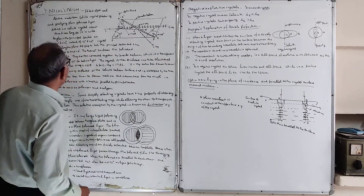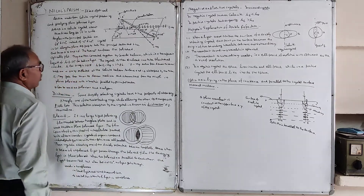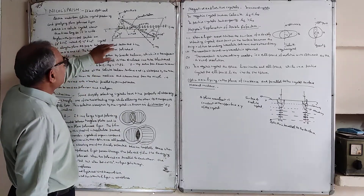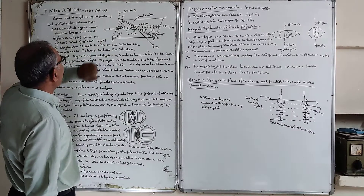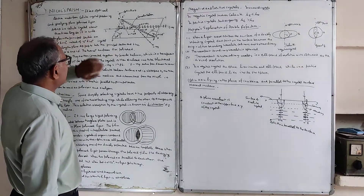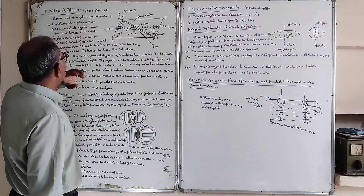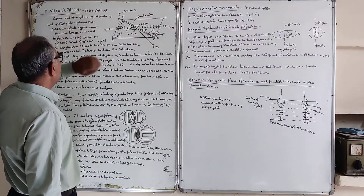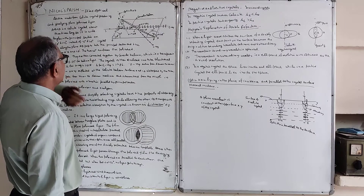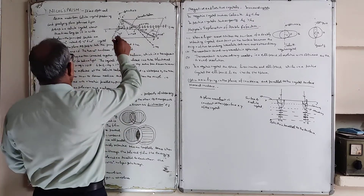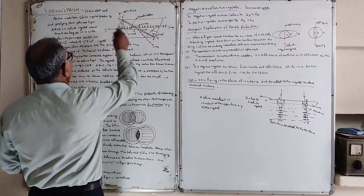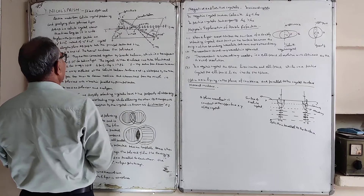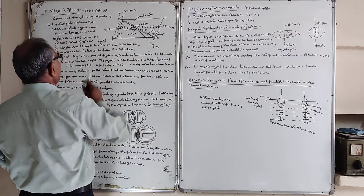Today we are going to discuss the Nicol Prism. The Nicol Prism is an optical device made from calcite crystal, used for producing and analyzing plane polarized light.